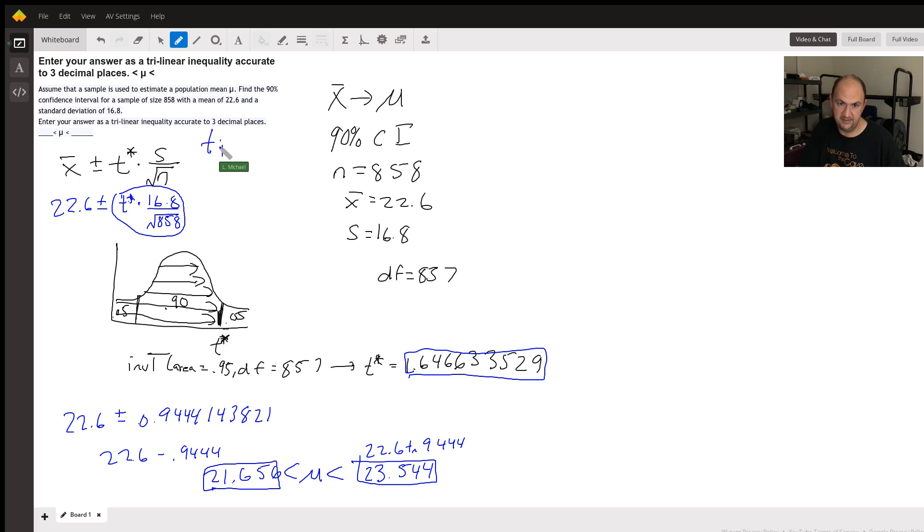That is the correct answer, assuming your teacher wants you to use a T-interval and not a Z-interval. You should be using a T-interval because the sample standard deviation is known, not the population standard deviation.